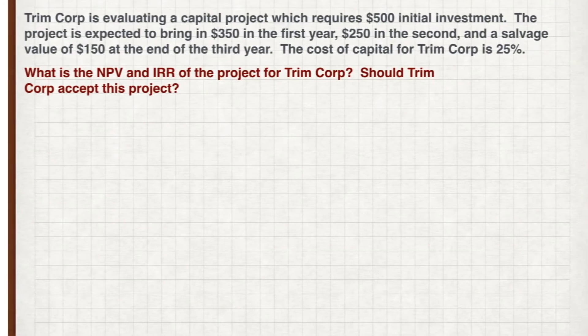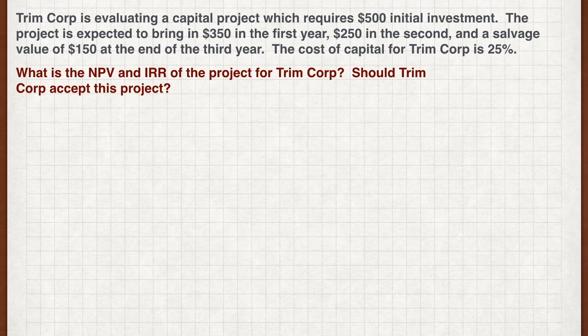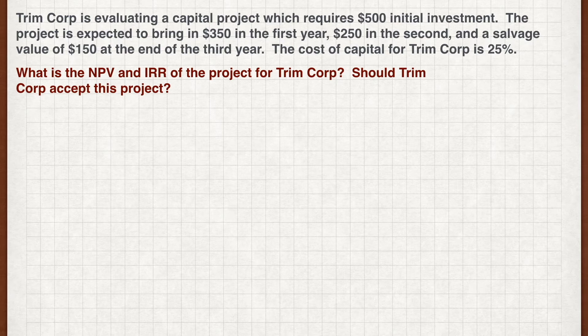Trimcorp is evaluating a capital project which requires a $500 initial investment. The project is expected to bring in $350 in the first year, $250 in the second, and a salvage value of $150 at the end of the third year. The cost of capital for Trimcorp is 25%. What is the NPV and IRR of the project for Trimcorp? Should Trimcorp accept this project?